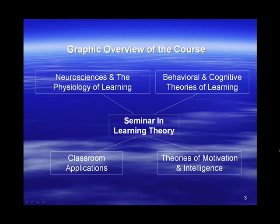The way this course is structured is as follows. We'll begin the term by looking at the neurosciences and the physiology of learning. That will be followed by a study of the behavioral and cognitive theories of learning, theories of motivation and intelligence, and throughout the term we'll focus on classroom applications of all of these theories.